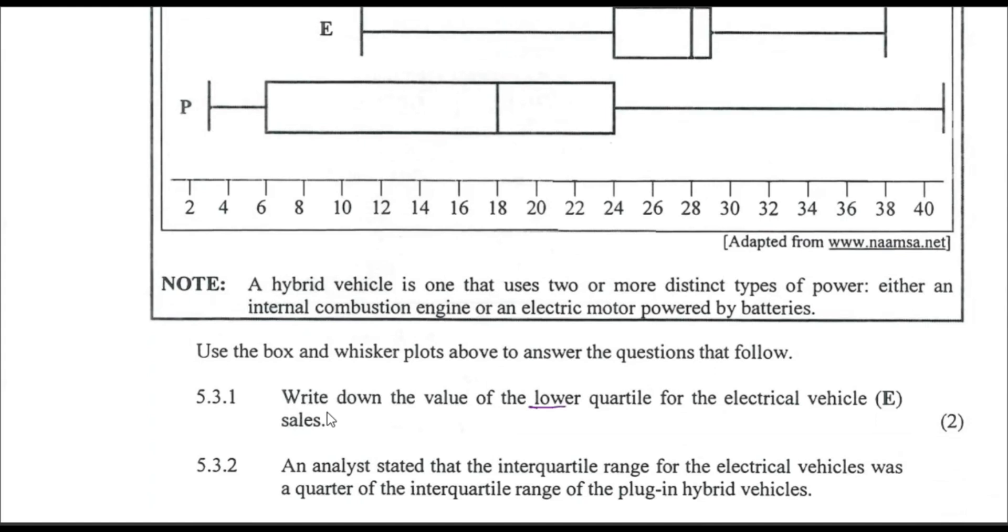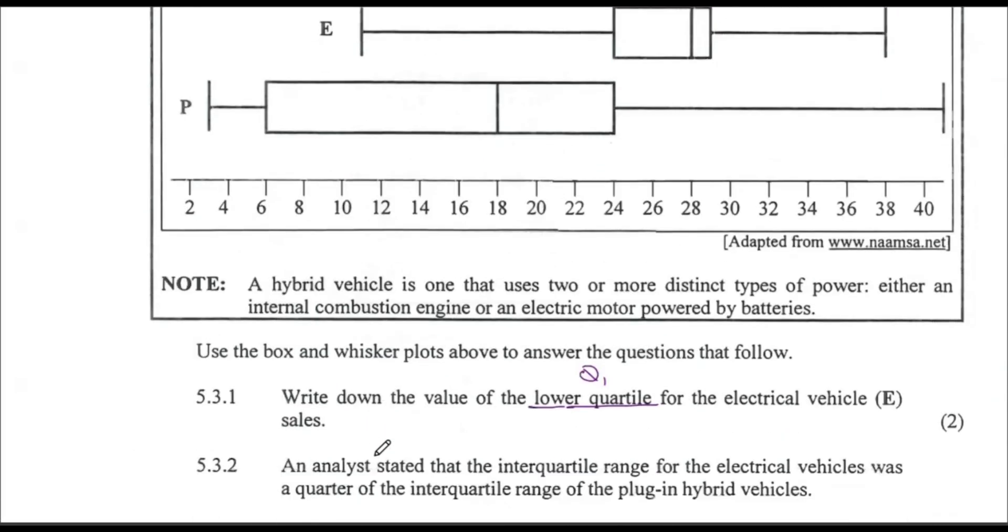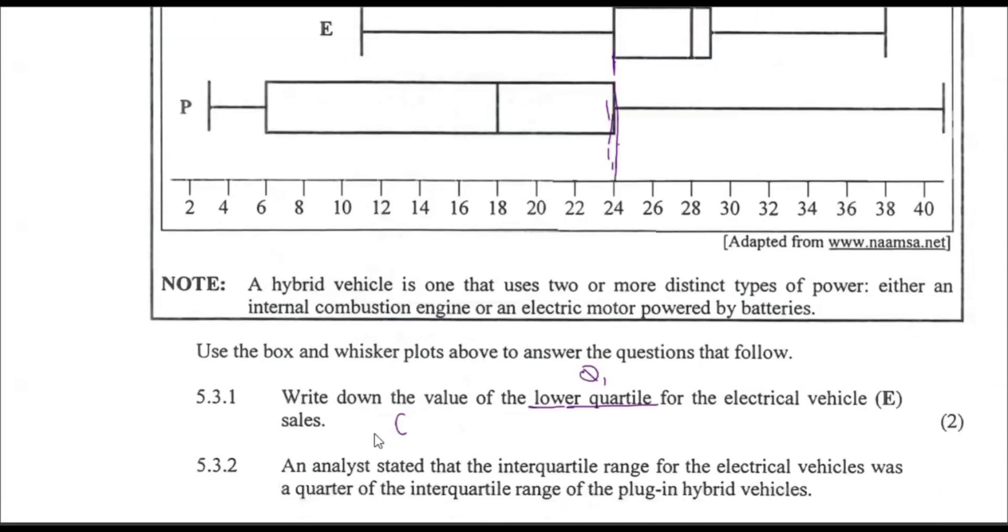Write down the value of the lower quartile for electrical vehicles. In your head, you know very well the lower quartile is Q1. Q1 will always be the second line from your left-hand side. That's why we call it the five-point summary: minimum, Q1, Q2, Q3, and maximum. For electric vehicles, we put a line here and match this number. That's approximately 24, so our Q1 equals 24.